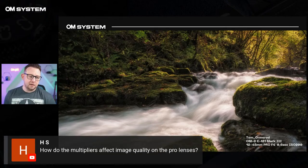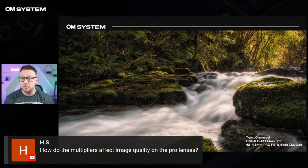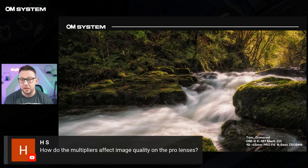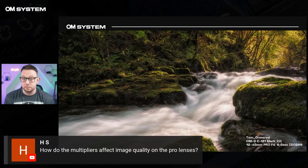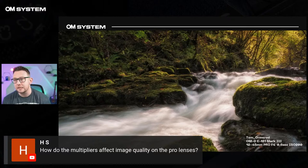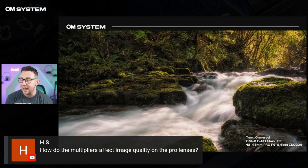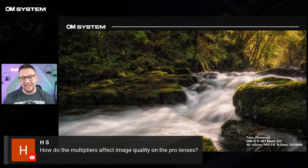HHS asks: how do teleconverters affect image quality on the pro lenses? In my personal experience it varies depending on the combination. My perfect personal combination would be to pair the MC-20 two-times converter with the 40-150 f2.8 Pro, and pair the MC-14 1.4x with the 300mm lens. Those combinations complement the lens and teleconverter capability to the point where the image quality difference is negligible. Do it in reverse and you probably won't see the best. For the 150-400, you can put any converter on it because that lens is just a blazing unicorn of light.